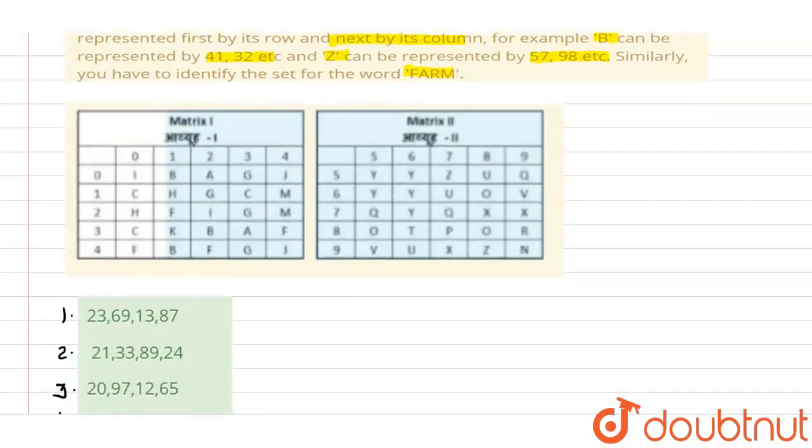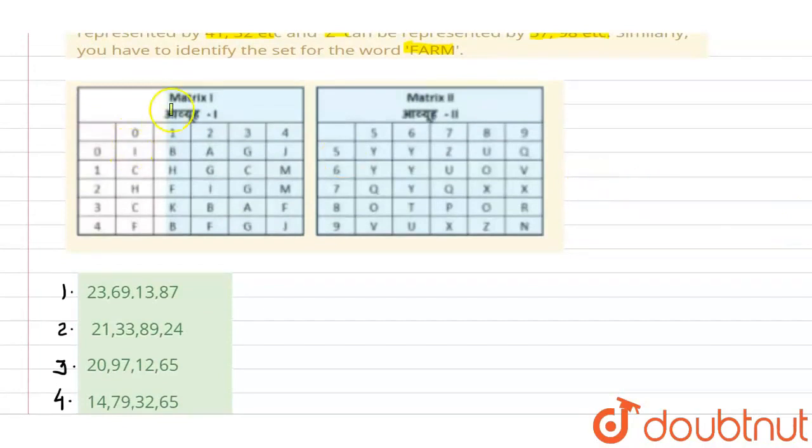We have given these two matrices. Here, if I take the alphabet B, how will I represent B? First I represent by row, which is row zero, and which column? 1. So B's code will be 01.